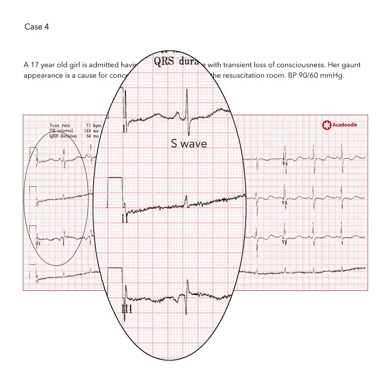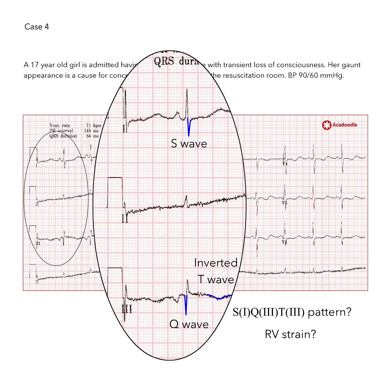There is an S1Q3T3 pattern present in the standard limb leads, raising the possibility of right ventricular strain. Could pulmonary embolism be the cause of this young woman's collapse? Probably not.